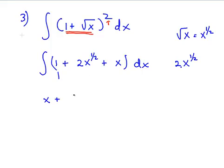So, a half plus 1 is 3 over 2. So, it's 2 times x to the 3/2 all over 3 over 2. x is x to the power of 1. 1 plus 1 is 2. So, it's x to the power of 2 over 2.